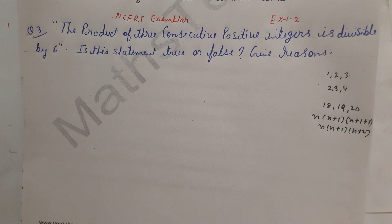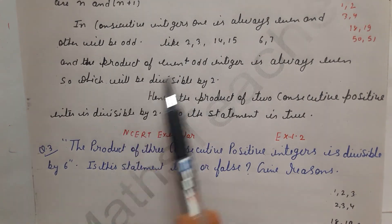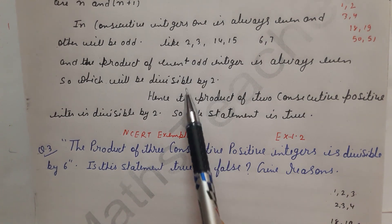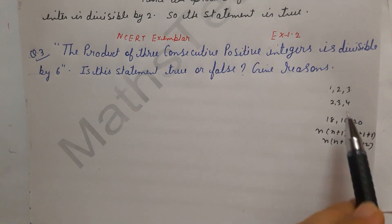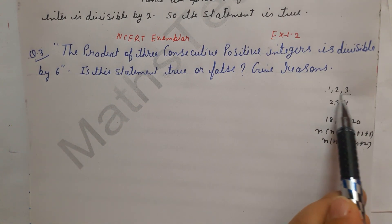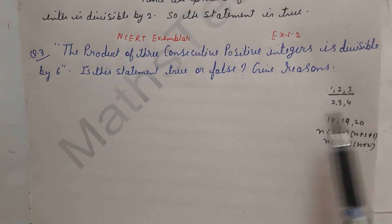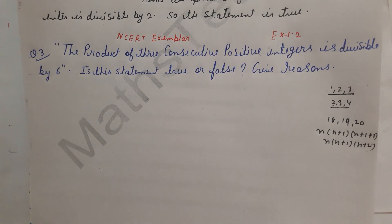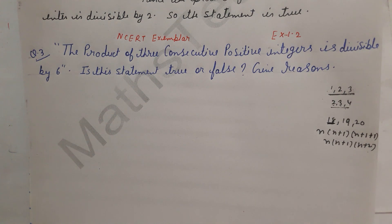If a number is divided by 2 then there is one odd and one even among consecutive numbers. If there is an even number, their product is always even, so it will be divisible by 2. For example, taking 1, 2, 3: 3 into 2 is 6, so it is divisible by 6.